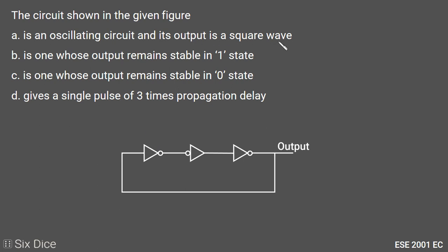So option A is the right answer. It is an oscillating circuit and its output is a square wave, because the output is changing from zero to one to zero to one. Option A is the right answer for this question.